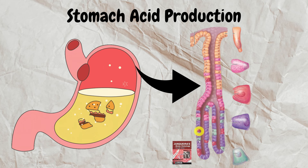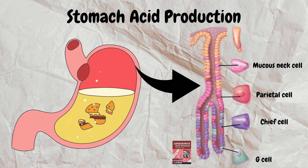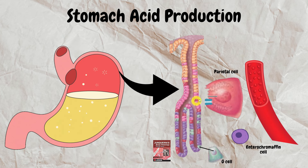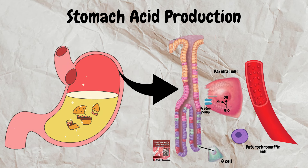In the glandular epithelium we have mucous neck cells, parietal cells, chief cells, and enteroendocrine cells including the G cell and enterochromaffin cells. We are specifically concerned with the parietal cell, the G cell, and the enterochromaffin cell. Inside the parietal cell, water breaks down into hydrogen and hydroxyl ions. The hydroxyl ion combines with carbon dioxide already present, forming bicarbonate ion, which is then pumped out from the basal side into the blood vessel.